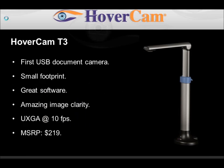The Hovercam T3 is the only $200 document camera with performance normally found in competing products that often cost around $600 or more. It has a 3 megapixel lens and delivers UXGA resolution at 10 frames per second.